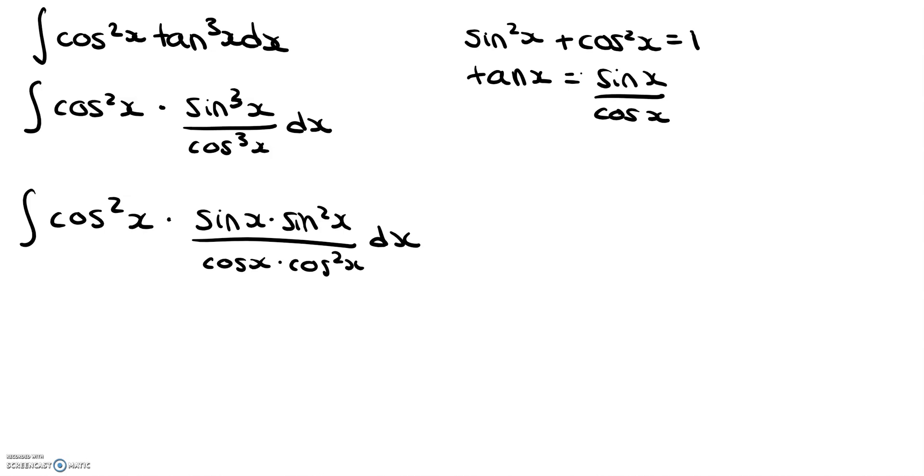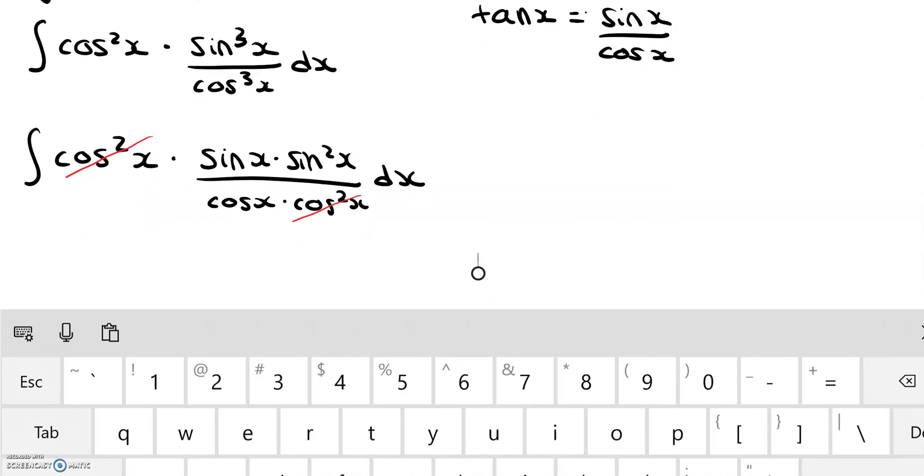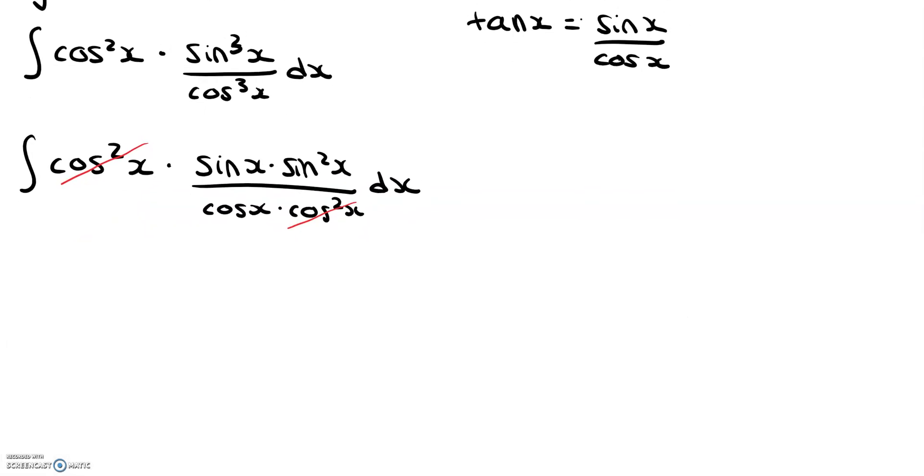Okay, so now that we've done this, we can see that we can cancel cosine squared x from the numerator and the denominator, so that cancels out. Now we are left with sine x times sine squared x divided by cosine x.